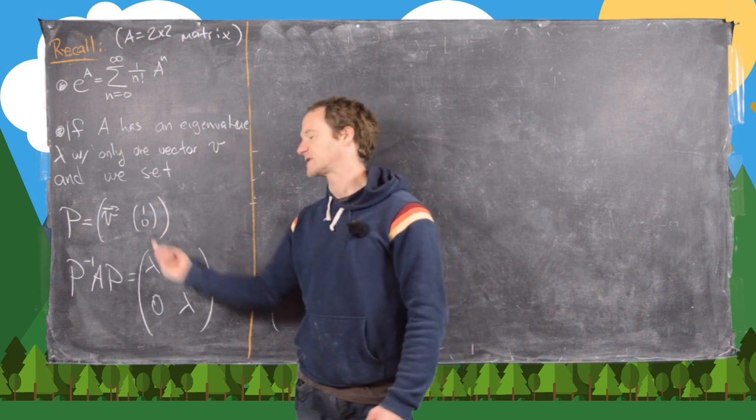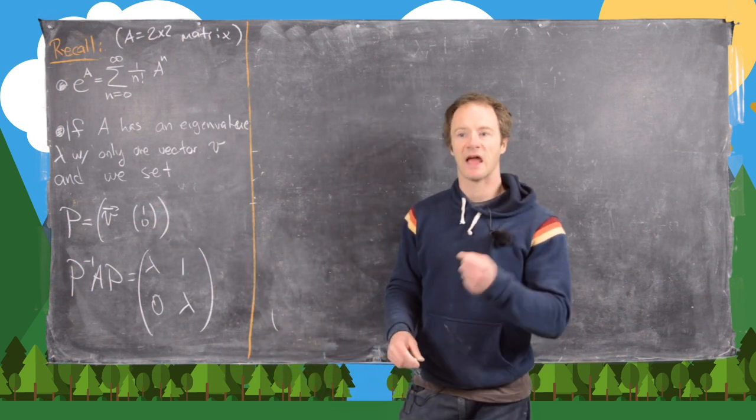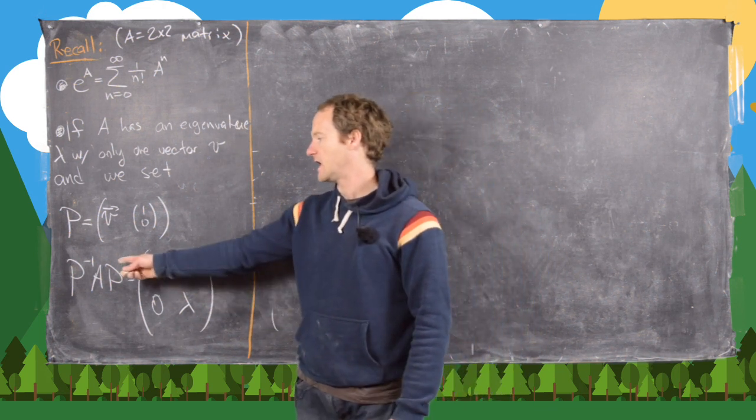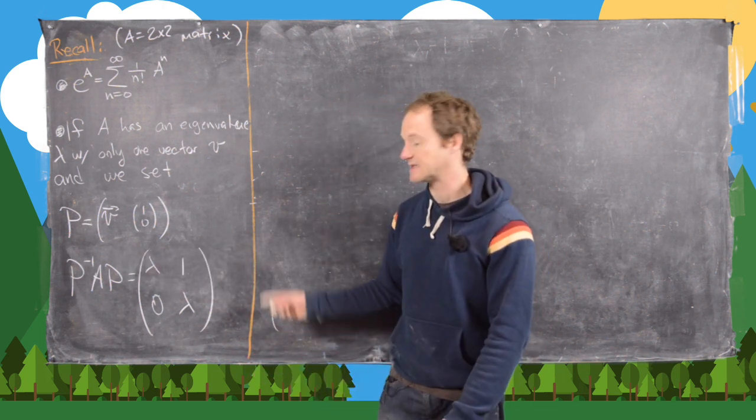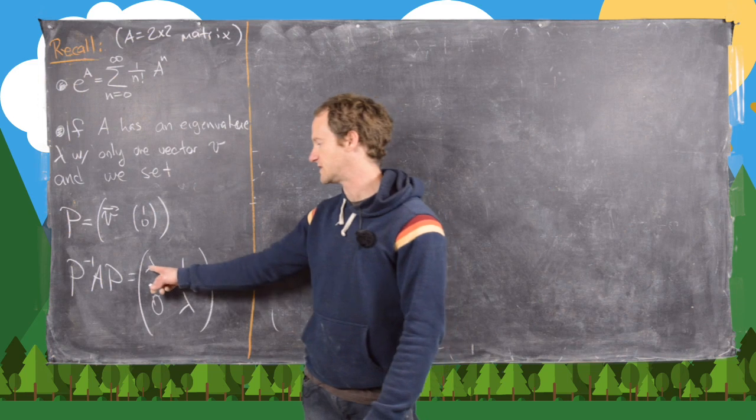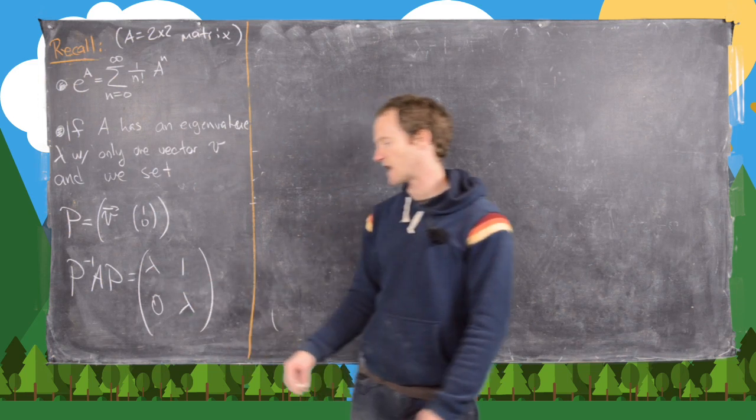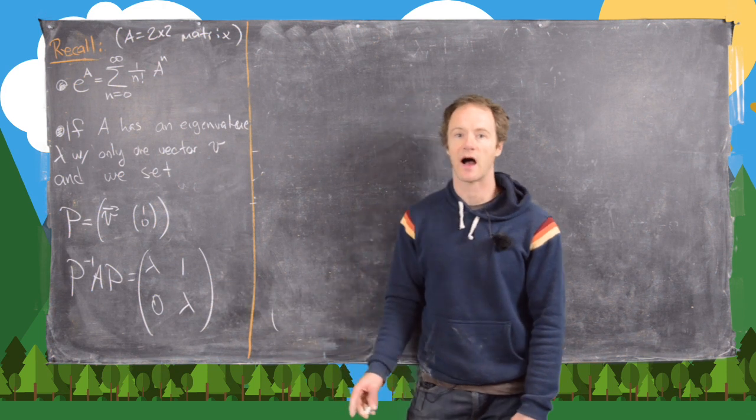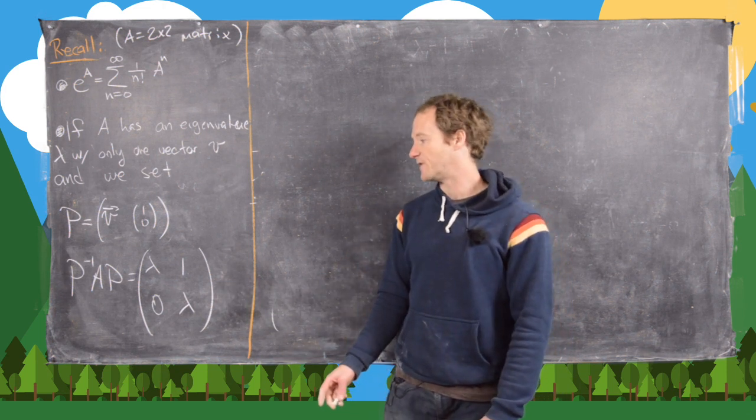And in fact, we can pick lots of things to go here, but this works. And in the bigger, more general case, it's a bit trickier. And then in this case, P⁻¹AP is not diagonal, but it's equal to this: λ on the diagonals and a 1 on the off diagonal. So this is called the 2×2 Jordan block with eigenvalue λ.